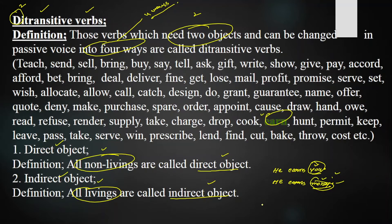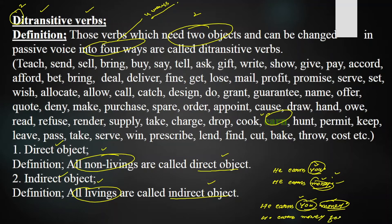You need to bring the indirect and direct object together to complete the meaning of the ditransitive verb. So: 'he earns you money' — he earns money for whom? For you. Mostly we bring the indirect object first and the direct object at the end. If you want to shuffle, the indirect object is followed by a preposition: 'he earns money for you.' These are the two ways in active voice.